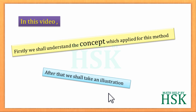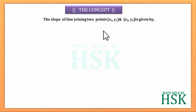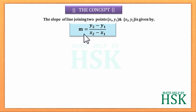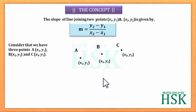To begin with the concept, we know that the slope of a line joining two points (x1, y1) and (x2, y2) is given by m = (y2 - y1) / (x2 - x1). We consider that we have three points A(x1, y1), B(x2, y2), and C(x3, y3).